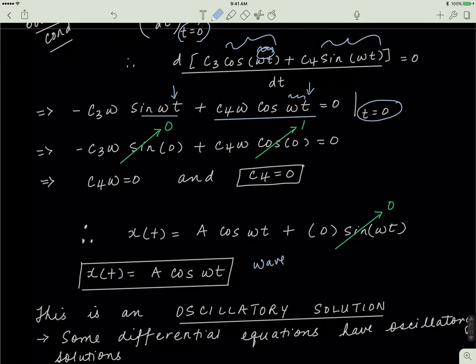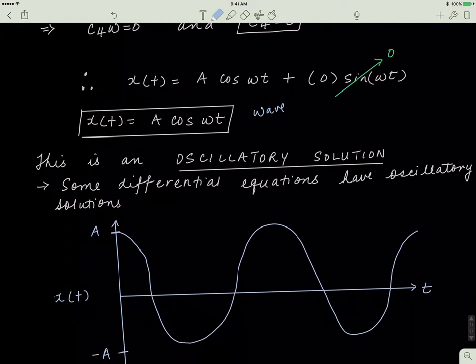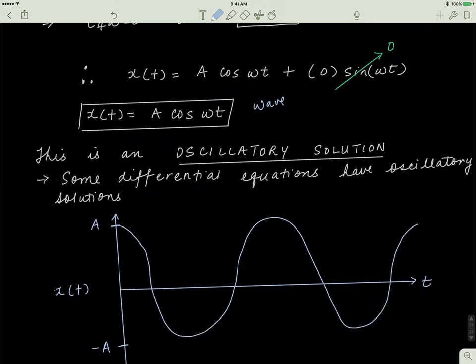Some differential equations have oscillatory solutions. If I plot a·cos(omega·t), the amplitude of this wave is a — the height goes from positive a to negative a. It fluctuates with some frequency and period. One wavelength spans from one peak back to the corresponding point of the next cycle.